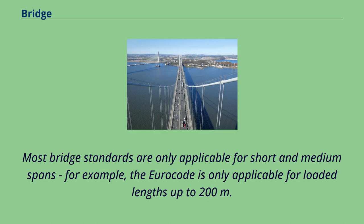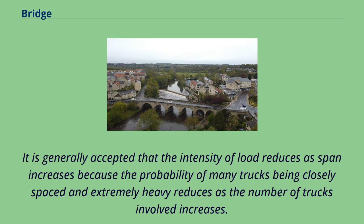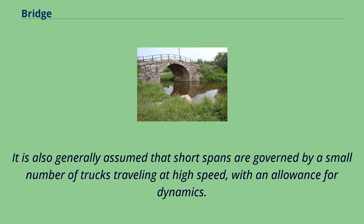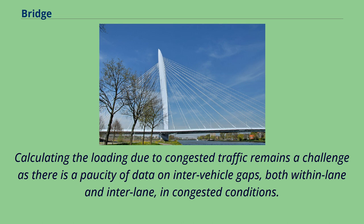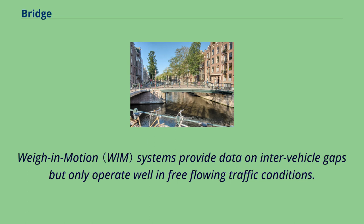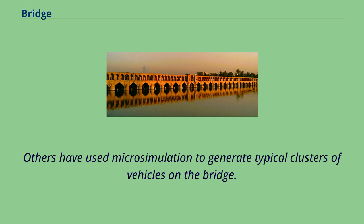Most bridge standards are only applicable for short and medium spans — for example, the Eurocode is only applicable for loaded lengths up to 200 meters. Longer spans are dealt with on a case-by-case basis. It is generally accepted that the intensity of load reduces as span increases because the probability of many trucks being closely spaced and extremely heavy reduces as the number of trucks involved increases. It is generally assumed that short spans are governed by a small number of trucks traveling at high speed, with an allowance for dynamics, while longer spans are governed by congested traffic with no allowance for dynamics needed. Calculating the loading due to congested traffic remains a challenge as there is a paucity of data on inter-vehicle gaps. Weigh-in-motion systems provide data on inter-vehicle gaps but only operate well in free-flowing traffic conditions. Some authors have used cameras to measure gaps and vehicle lengths in jammed situations and have inferred weights from lengths using WIM data. Others have used microsimulation to generate typical clusters of vehicles on the bridge.